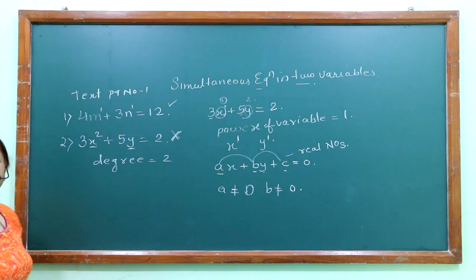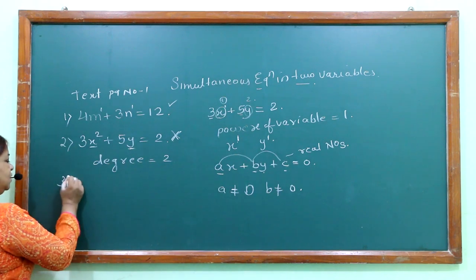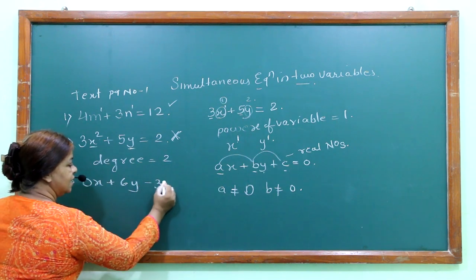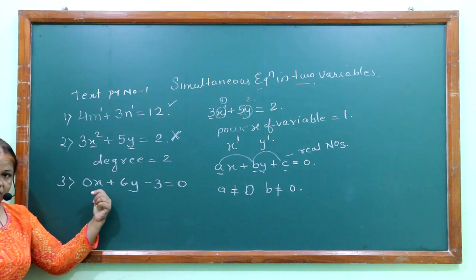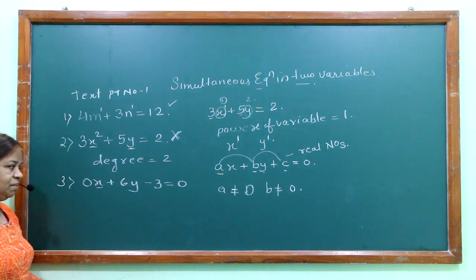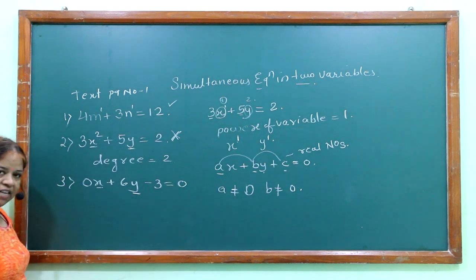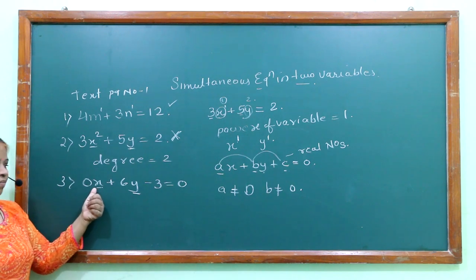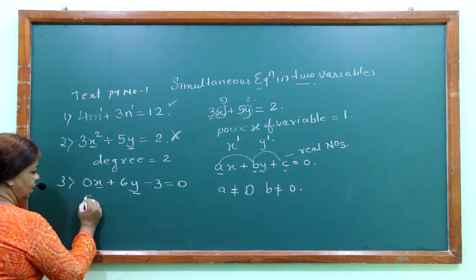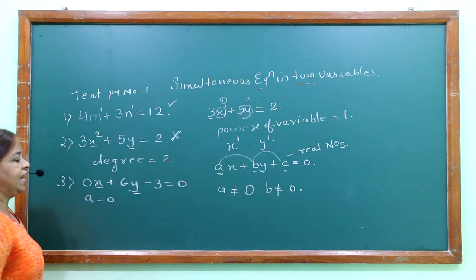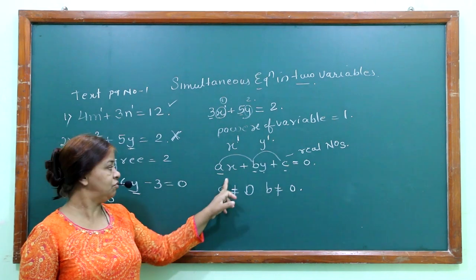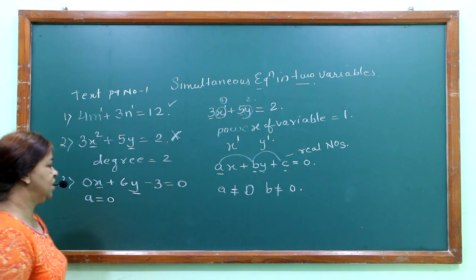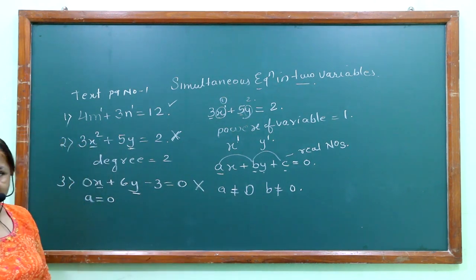The third equation is 0x plus 6y minus 3 equals 0. Here we can see x as one variable and y as the second variable, so there are two variables. But look at the coefficient of x — the coefficient of x is 0. That means a equals 0. I said if the coefficient of any one variable is equal to 0, that equation can never be a simultaneous equation.